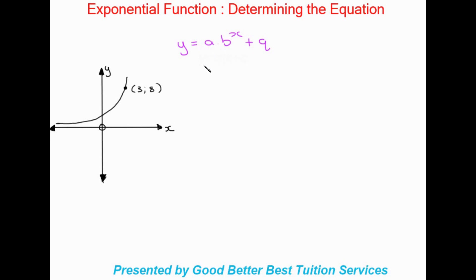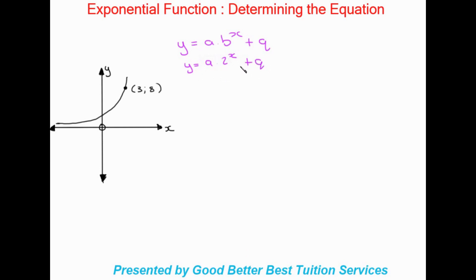One way they reduce the unknowns is by giving you one of the unknown variables. For example, they could say y equals a times 2 to the power of x plus q, then give you the graph and ask you to determine the equation. In this case it's only two unknowns, which makes it easier.